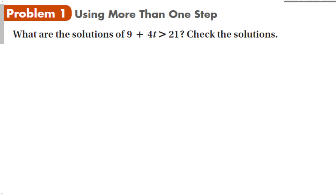In this problem, we can see that there is more than one thing we're going to have to do in order to isolate the variable. In order to get 4t by itself, the first thing I'm going to do is subtract 9 from both sides. That leaves me with 4t is greater than 12.